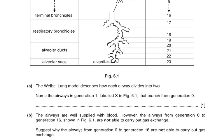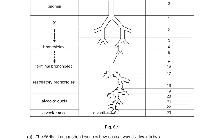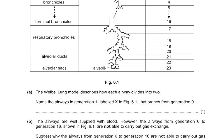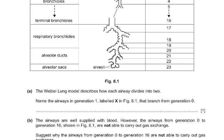The question asks you to name the airway in generation 1, labeled X in figure 6.1, that branches from generation 0. The answer is the left and right bronchus — or bronchi, which is also correct.